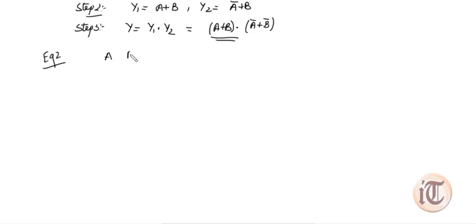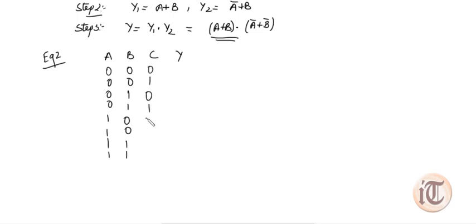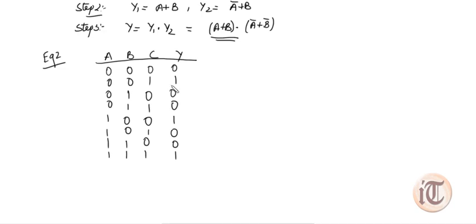Now example number two. Suppose we have a truth table with inputs A, B, C and output Y. The output values are: 0, 1, 0, 1, 0, 0, 1, 0. For the POS expression we consider where y equals zero: that gives us Y1 for the first entry, Y2 for the third entry, Y3 for the fourth entry, Y4 for the sixth entry, and Y5 for the eighth entry.